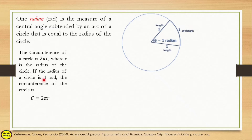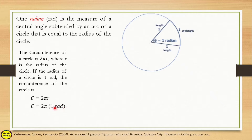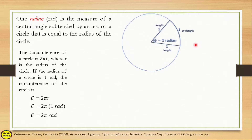If the radius of a circle is 1 radian, the circumference of the circle is — substituting 1 radian for r — 2π times 1 radian, so the answer is 2π radians. So the full circle is equivalent to 2π radians in radian measure.